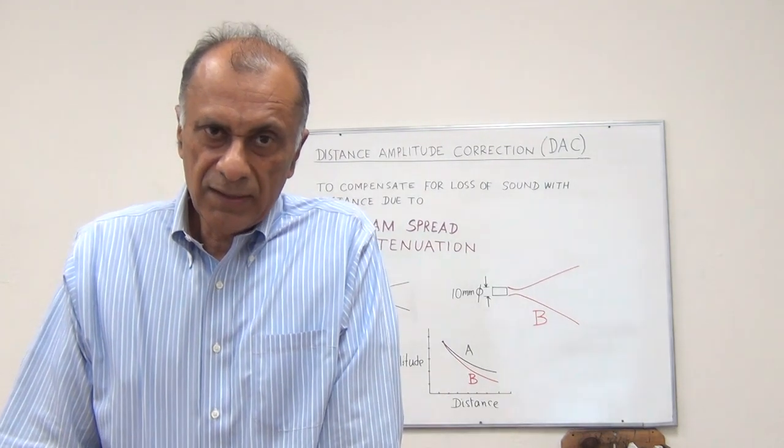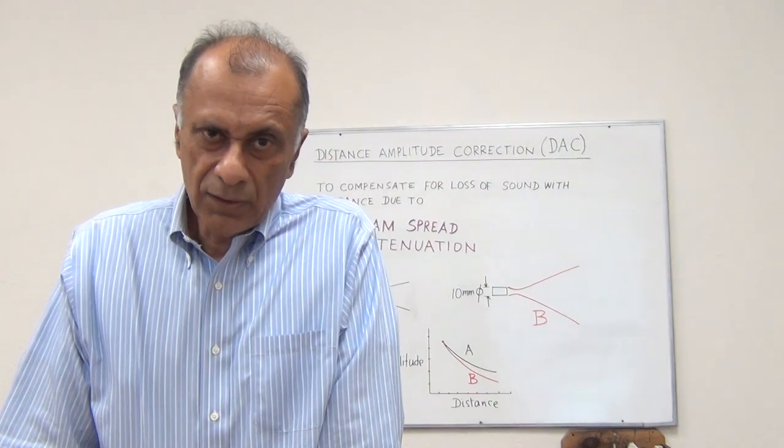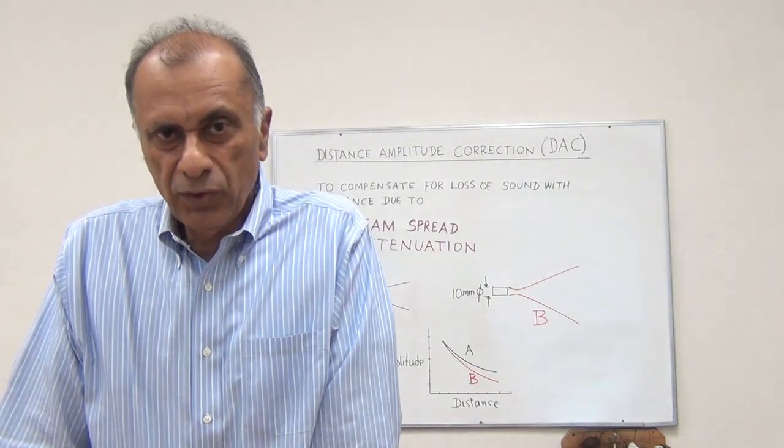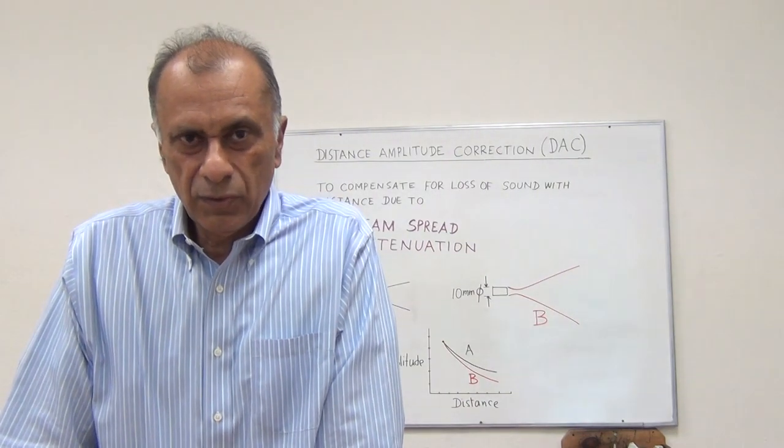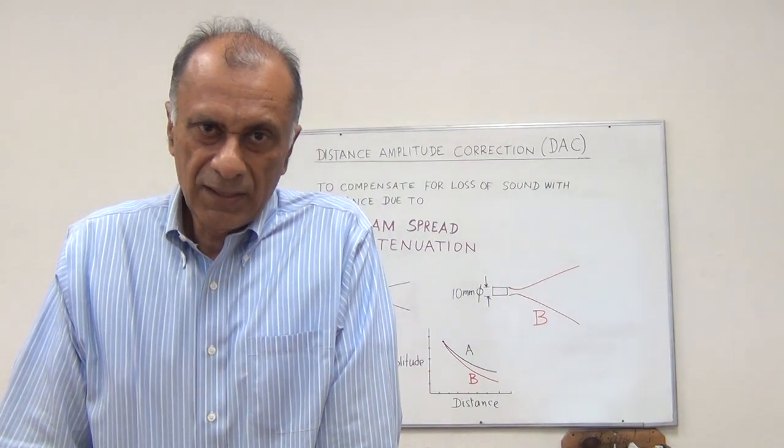the DAC curve for angle beam inspection is set up on notches. For pressure vessels, the DAC curve is set up on side drilled holes. That would be a presentation for another video. Thank you very much, and that concludes this presentation.